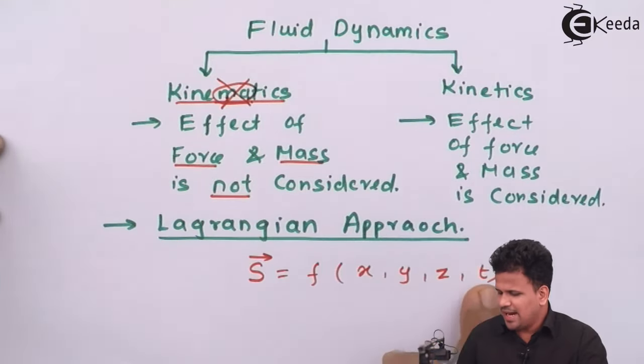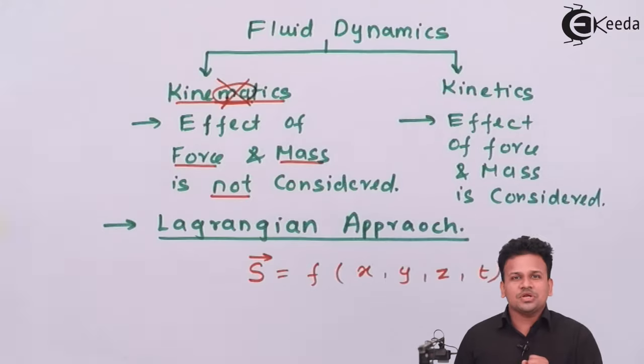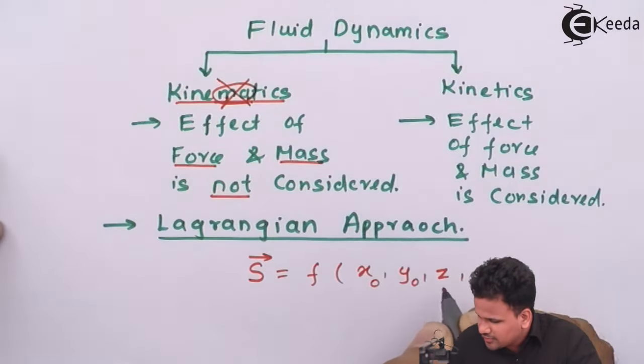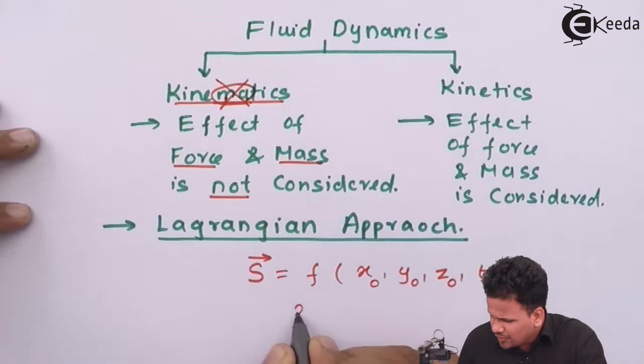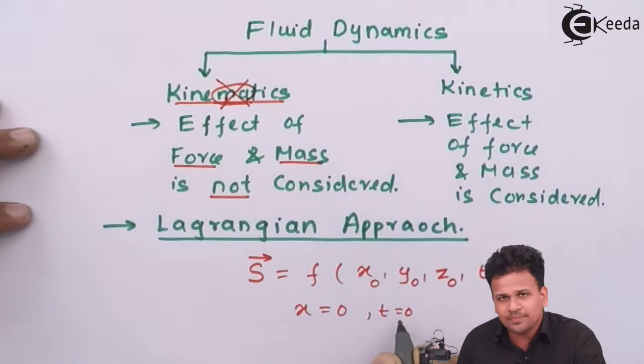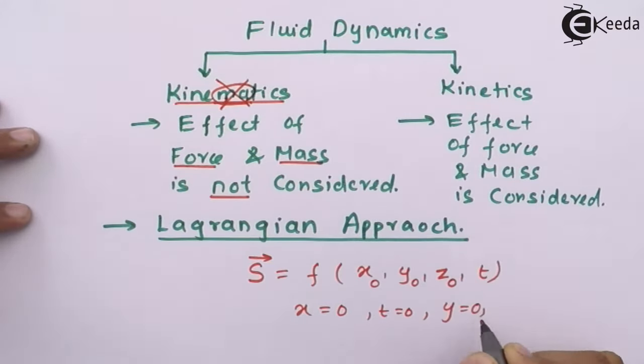The position vector is a function of x, y, z, and time, where x, y, z are spatial coordinates and t is the time coordinate. We should always consider the spatial coordinates with respect to the origin, meaning x₀, y₀, and z₀ — that is, x equals zero, y equals zero, and z equals zero when t equals zero. So the position vector is a function of x₀, y₀, z₀, and time. This applies to each and every particle of the fluid.